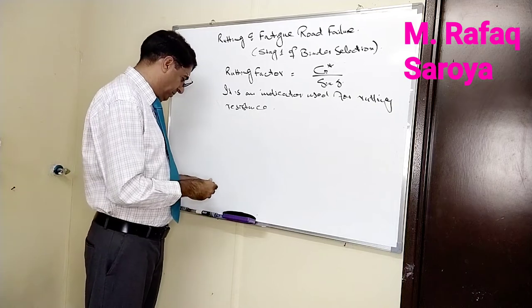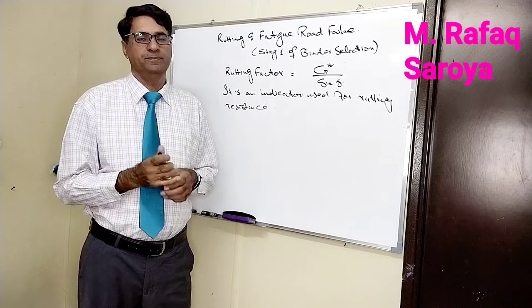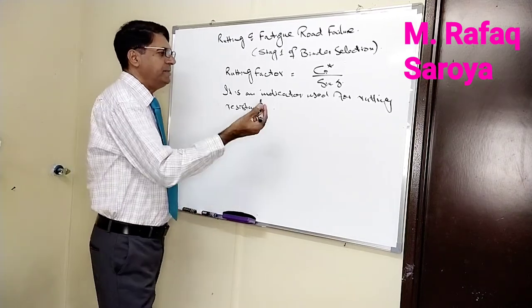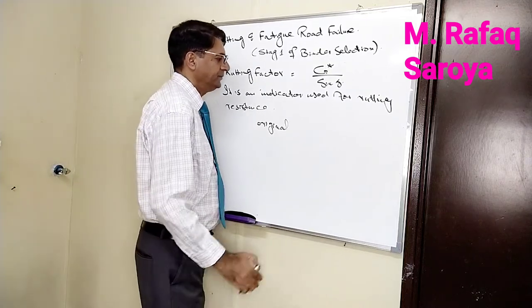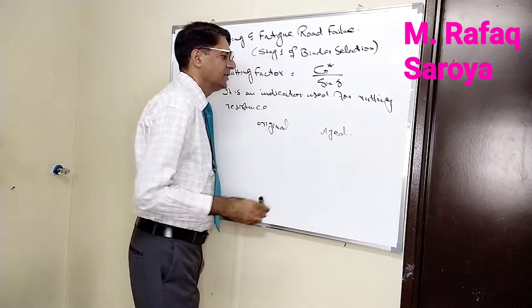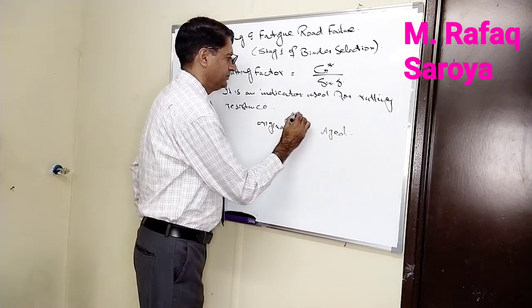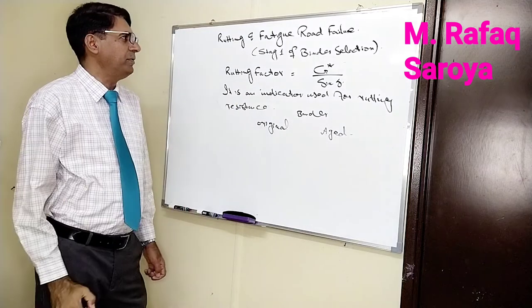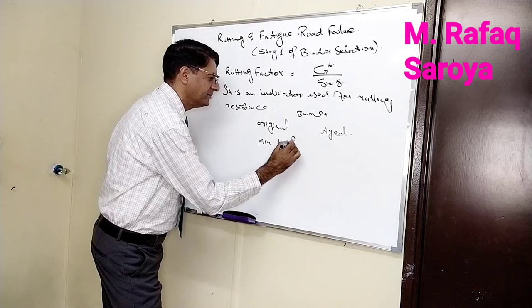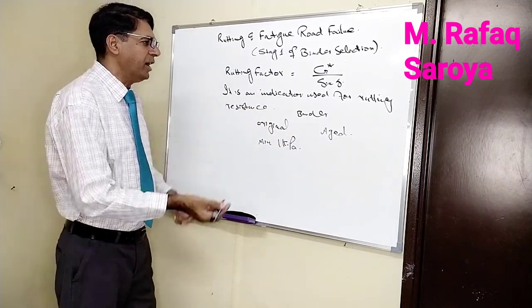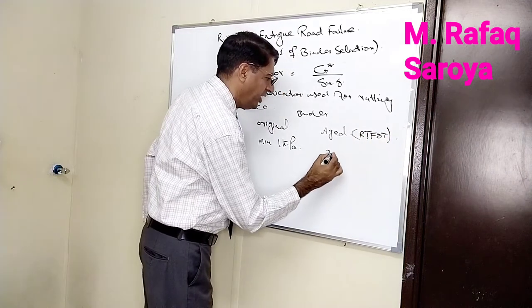Because this is part of the specification, the values are always given. We have two types of material: original and aged binder. When we have the binder in original form, the minimum value required is 1 kPa. When we have the aged binder after short-term aging, the minimum value is 2.2 kPa.